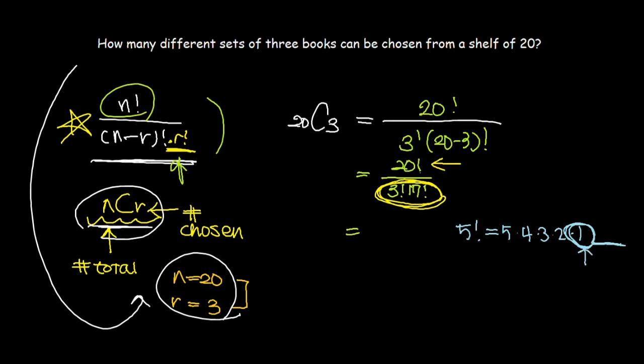Same thing for 20 factorial, 3 factorial, and 17 factorial. This can be simplified to 20 times 19 times 18 over 3 times 2, because 17 factorial cancels out. If you simplify this further, dividing 18 by 3 gives 6.